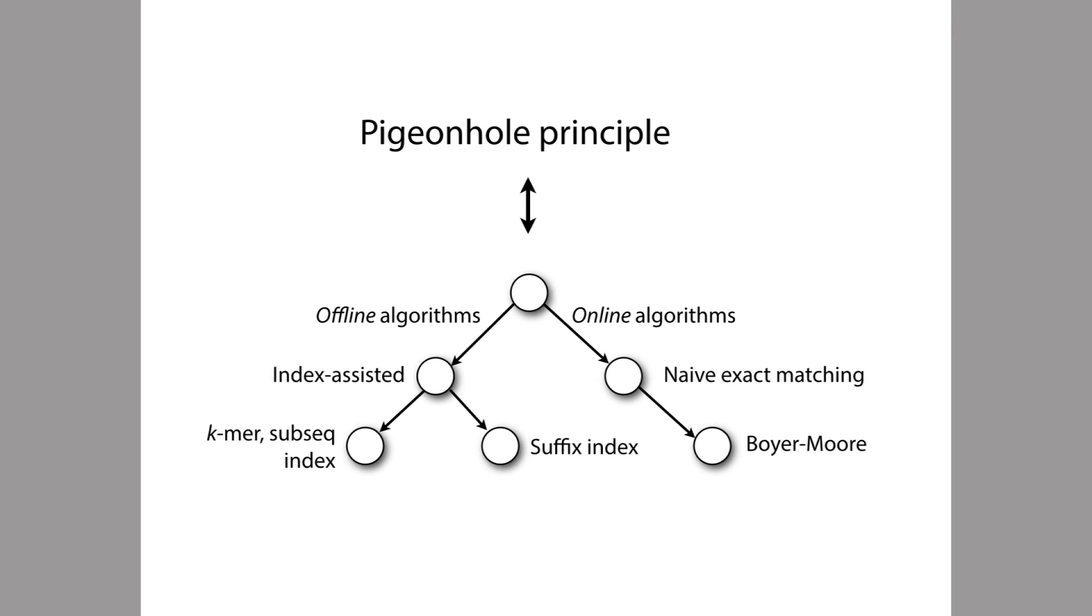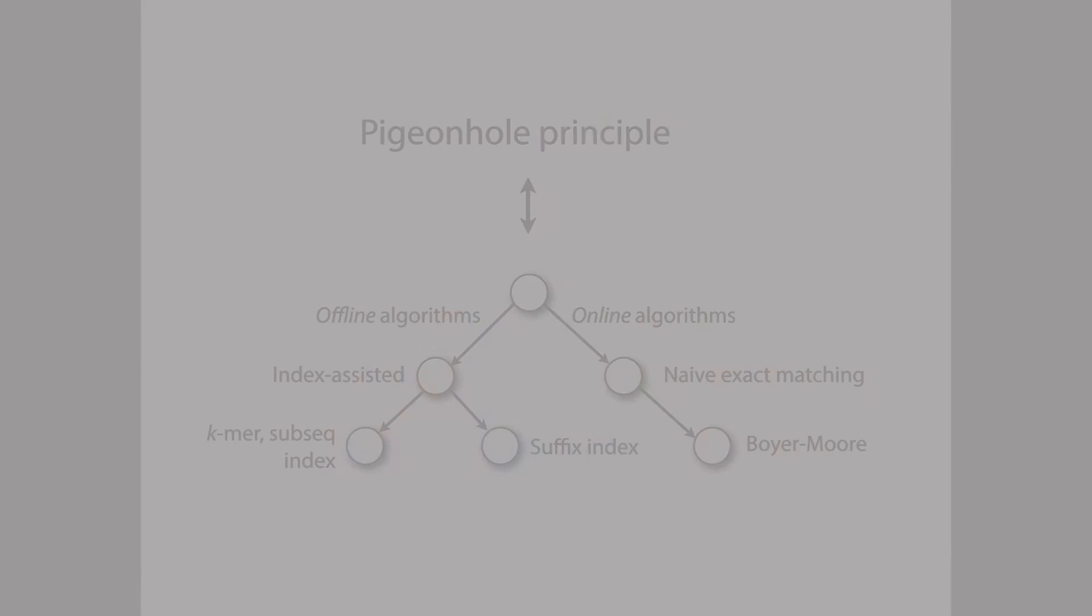This is the bridge that allows us to use exact matching algorithms. All the ones we've learned so far. You know, the naive exact matching, Boyer-Moore, index-assisted algorithms. We can use those algorithms to find approximate matches by dividing the pattern P up into partitions, looking for each of those partitions using an exact matching algorithm. And then wherever we find an occurrence of one of those partitions, we can do a verification step where we look in the neighborhood to see if we see a full occurrence of P with up to the maximum number of differences allowed.